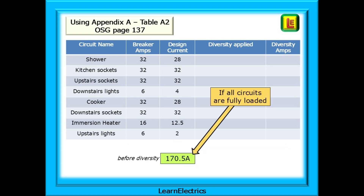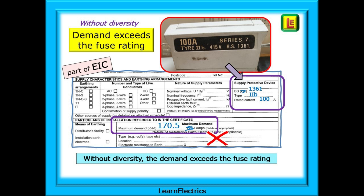Adding up all the design currents — not the breaker ratings — we have, before diversity, 170.5 amps as a maximum demand. When we complete an EIC, or electrical installation certificate, we will be asked to enter details of the supply protective device, the cut-out fuse. Our example house has a 100-amp BS1361 fuse, but the maximum demand before diversity is just over 170 amps. Clearly this can never be right — the maximum demand should be less than the fuse rating.